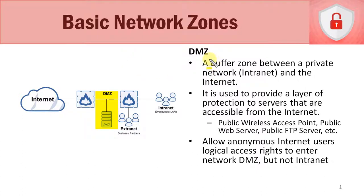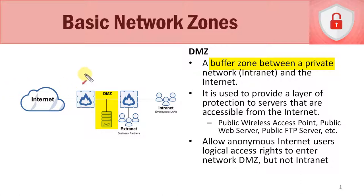A DMZ is a buffer zone between a private network — that being our internal network, where all the employees reside — and the public area, which is the internet. This buffer area works by having a firewall protecting it. We'll have a firewall on each side, and any data that wants to get into our network has to go through the DMZ.